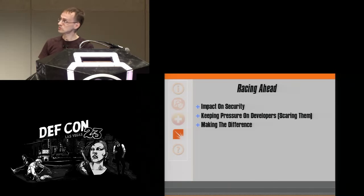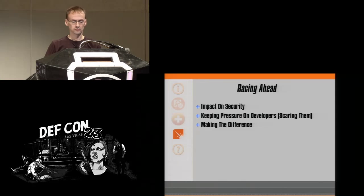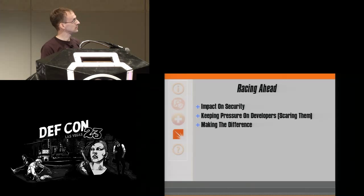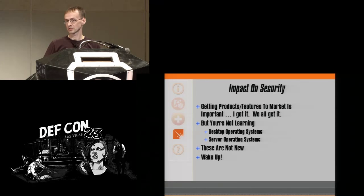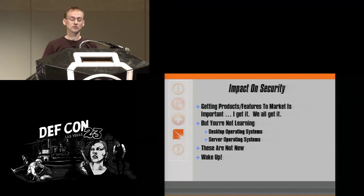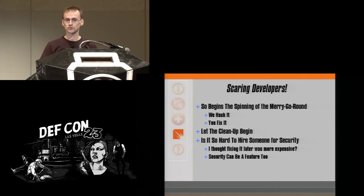We have a couple of minutes left. You're seeing something familiar here — vendors racing ahead, and the impact on security. We need to keep pressure on developers, which is why we're here: to freak them out, sometimes to upset them, and talk about the difference we're trying to make. Getting products and features to market is important — we get it, they need to be out there first and make money. But desktop and server operating systems have been through this before — they have best practices. I don't think you're reading them. Develop your own best practices and start using them, because we're starting this merry-go-round again. Every year at these conferences we hack it and then we fix it.